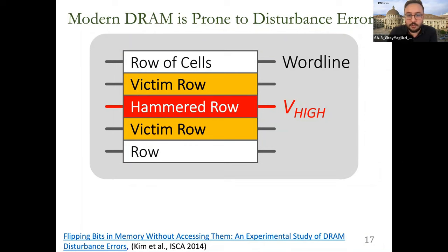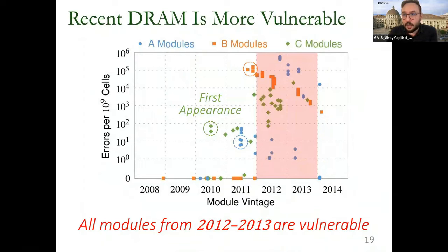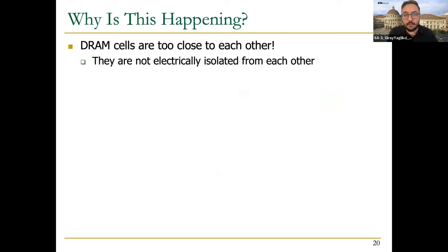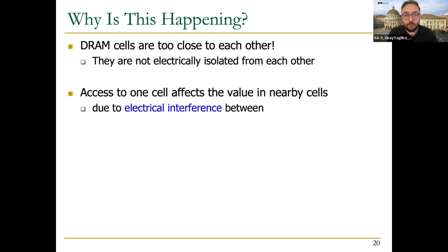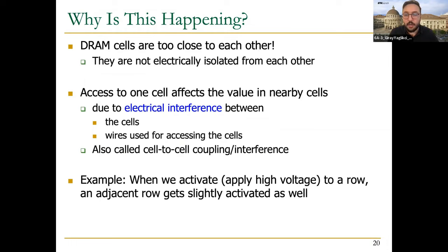We call the row we keep opening and closing the 'aggressor row' or 'hammered row,' and the affected rows 'victim rows.' This access pattern induces bit flips in many DRAM chips from three major manufacturers, as shown experimentally. Newer chips are vulnerable to rowhammer starting from 2012 — chips from all manufacturers are vulnerable. As DRAM technology scales, cells get too close to each other, losing electrical isolation, and accessing one cell induces electrical interference between cells and access wires.